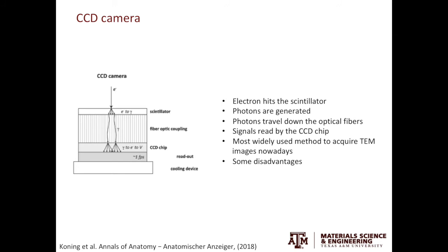On the left is a schematic of a CCD camera. From top down, you have the scintillator, which converts electrons into photons; then you have optical fibers to transport photons; and lastly, you have the CCD chip to read out photons and give you the signals. When an electron hits the scintillator, it will generate multiple photons, and those photons will transport along the optical fibers and get read by the CCD chip.